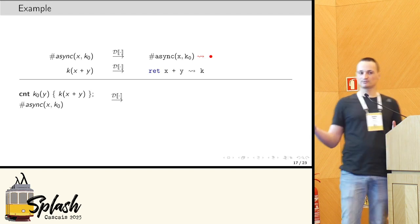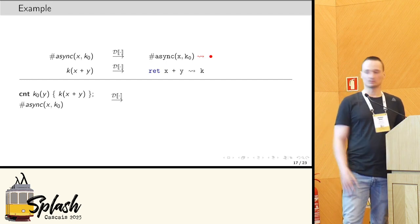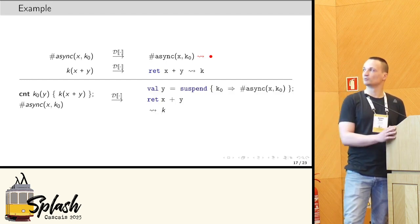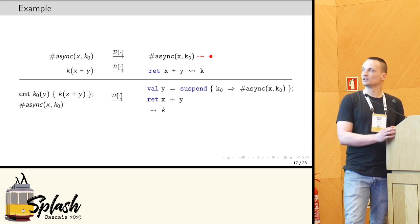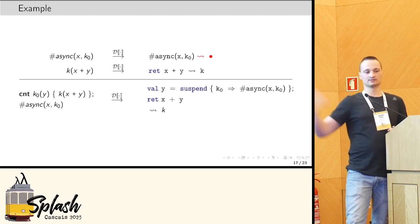So, we have to insert a control operator. And, actually, here we have to capture the continuation, which is why we insert a suspend, resulting in the program on the right here. So, now, the overall statement returns, of course, to the continuation to which the second statement returns.